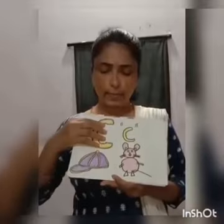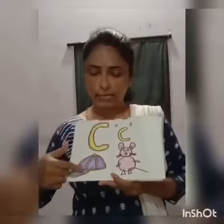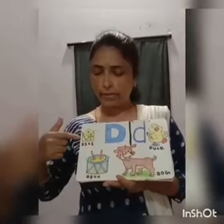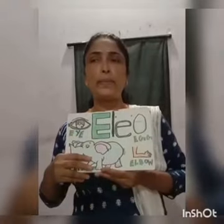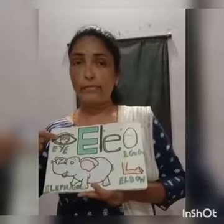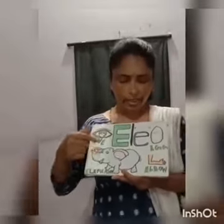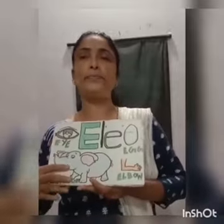Next alphabet is C. C for cap, C for cat, C for car, C for camel. Next we have capital D — D for dice, drum, dog, duck. After D, we have capital E. E for ice, elephant, elbow and egg.